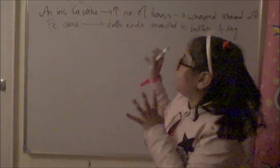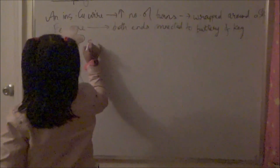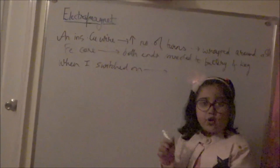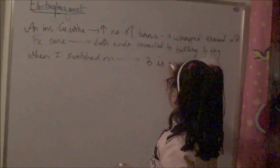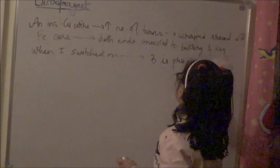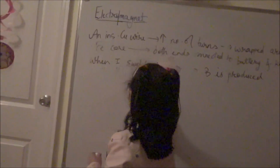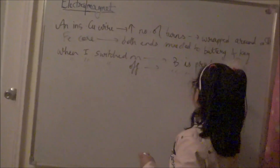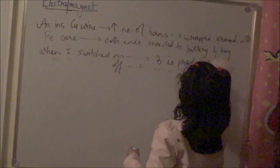See what happens in an electromagnet. When current is switched on, a magnetic field is produced and the electromagnet will work. When current is switched off, the magnetic field is not produced and the electromagnet will not work.